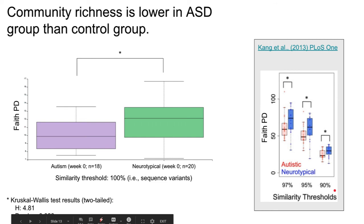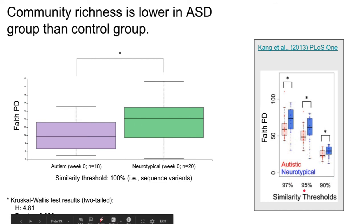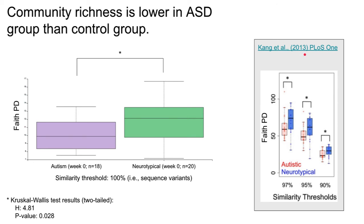This was exciting because it recapitulated what previous studies had shown. A number of cross-sectional studies had shown differences in the microbiome between individuals with autism and neurotypical controls — this is data from one of those previous studies published in 2013 by my collaborators. That was a totally different cohort of individuals, and so what this suggests is that this is a consistent difference: when we look across different samples we find this same difference in community richness.